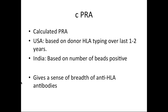The calculated PRA or CPRA: in the US, this is based on single antigen bead reports combined with donor HLA typing data from the whole US over the last one to two years, predicting how many donors would have a positive crossmatch. In India, CPRA is based on the flow PRA bead positivity count — giving a sense of the breadth of anti-HLA antibodies.